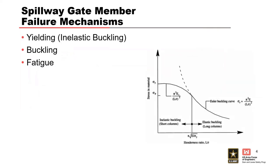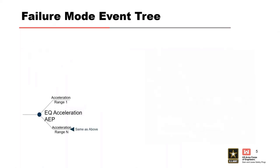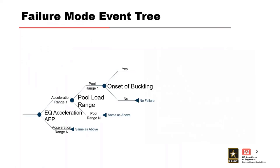The failure mechanism is a buckling of the strut arm, and that can happen by yielding — inelastic buckling — which is the case for shorter columns where the stress doesn't exceed the critical buckling load. Elastic buckling applies to longer columns. Fatigue can also lead to yielding or buckling of the member. For this potential failure mode, you have the seismic load ranges to consider, and the initiation is the onset of buckling, calculated as the interaction ratio of the strut arm.